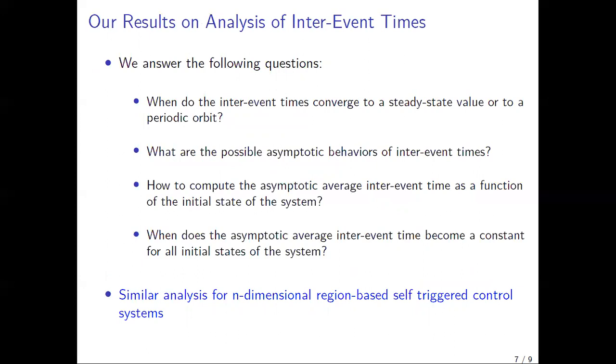When do the inter-event times converge to a steady-state value or to a periodic orbit? What are the possible asymptotic behaviors of inter-event times? How to compute the asymptotic average inter-event time as a function of the initial state of the system? And when does the asymptotic average inter-event time become a constant for all initial states of the system? We also do similar analysis for general n-dimensional region-based self-triggered control systems.